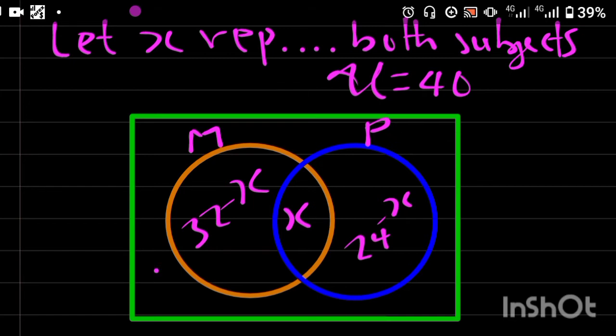But don't forget, the question says that 4 offer neither mathematics nor physics. So the 4 is outside mathematics and physics sets, but it is still inside the universal set.